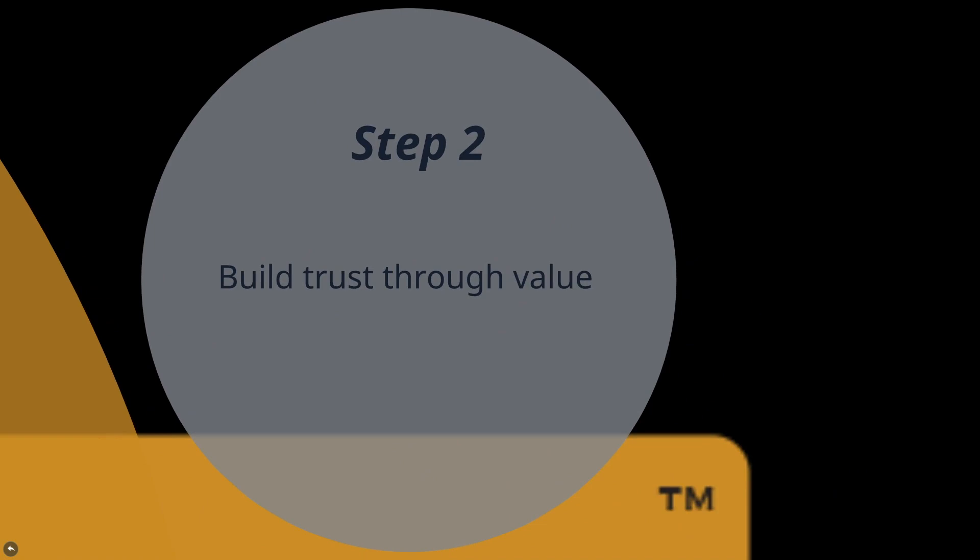Step two is building trust through value. Once we get the lead — whether through an opt-in page, a YouTube channel, a banner ad, or free traffic sources — we build that trust. If you're saying you can't start a business because you don't have money for ads, later on we are going to touch on some free traffic sources that are extremely valuable. You can use free traffic sources to test your funnel, experiment, and once you have something that works, scale up.